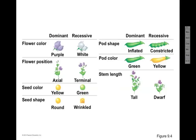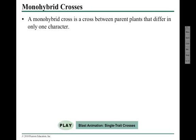This slide corresponds to page 147 in your textbook — these are the characteristics of plants, or traits, that Mendel studied, which we'll be talking about in this chapter. The first thing we're going to do is something called a monohybrid cross, which is a cross or mating between different parent plants that have a difference in only one characteristic.